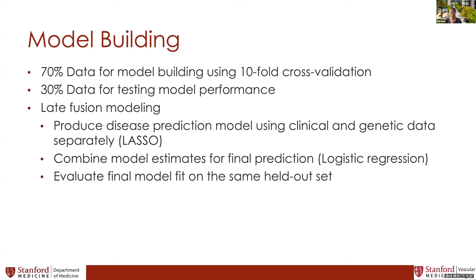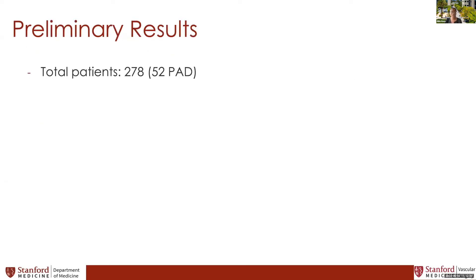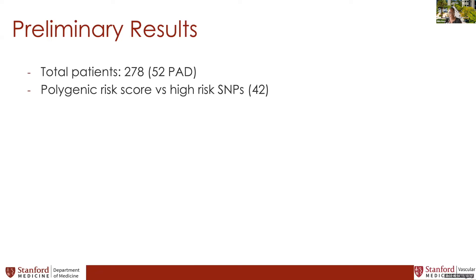We evaluated three approaches on the same held-out test set: a model built on clinical features alone, one on genetic features alone, and a fusion model combining predictions from each via logistic regression. After quality control we dropped about 10 patients, including 2 PAD cases. We looked at both the polygenic risk score summarizing genome-wide genetic risk for PAD and just 42 high-risk SNPs, hypothesizing that genotyping only a few genomic locations would be more practically implementable.